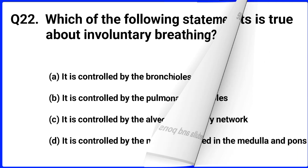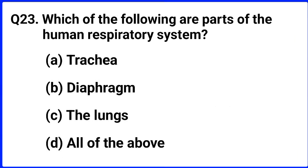Question number twenty-three. Which of the following are parts of the human respiratory system? The right answer is option D: all of the above — the lungs, diaphragm, and trachea.